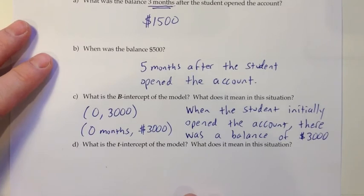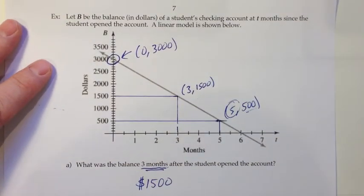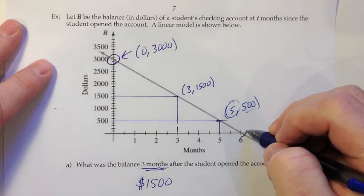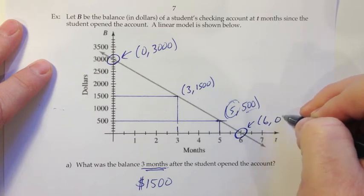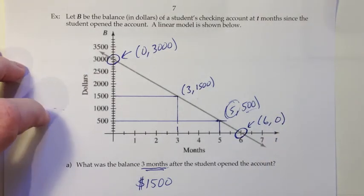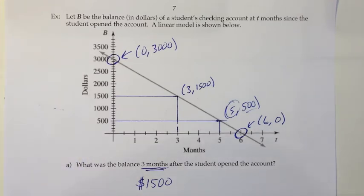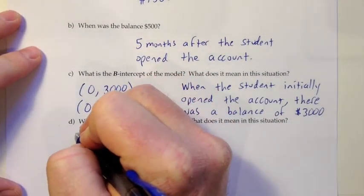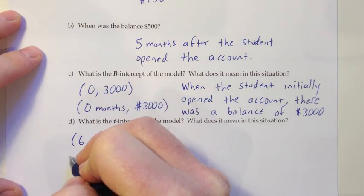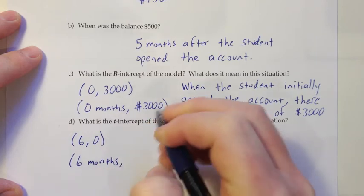And then the final question is, what is the t-intercept of the model, and what does that mean in this situation? So the t-intercept would be the place where our model intersects the t-axis. So that looks like this spot right here would be the t-intercept. And that is over 6 and up 0. So just as an ordered pair, it looks like it's (6, 0). And then we'll think about the units and making an interpretation of that one as well. So let's drop down here. So it's (6, 0). And then that would be 6 months and $0.